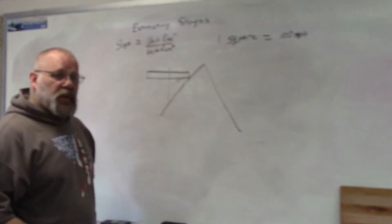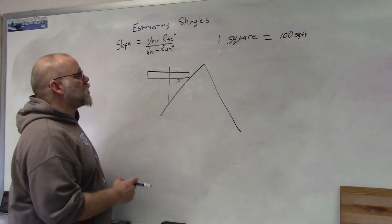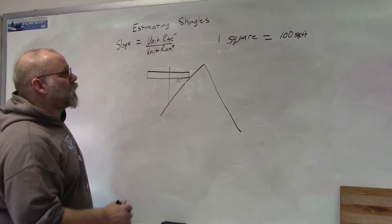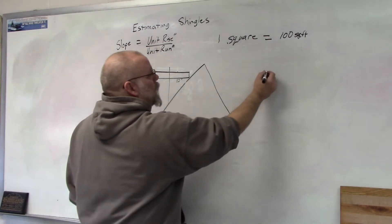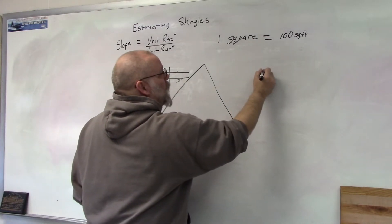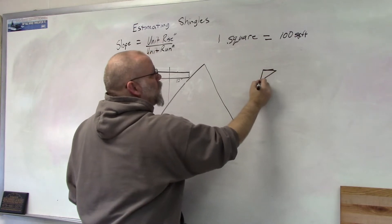I thought I would do a short video on how to find the slope of your roof. If you have a set of plans, there's going to be a little triangle symbol somewhere